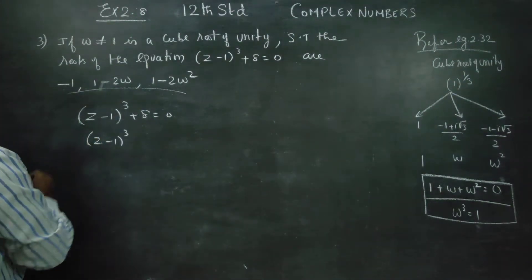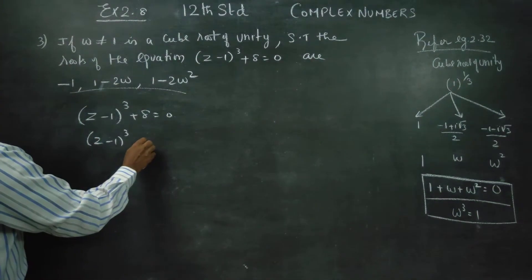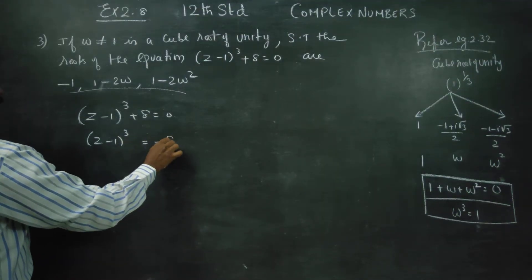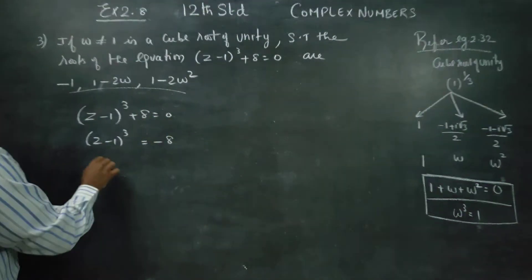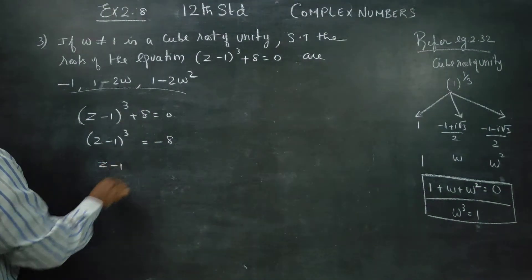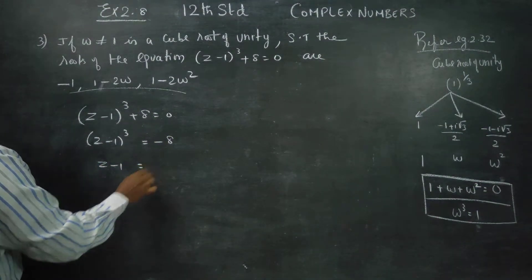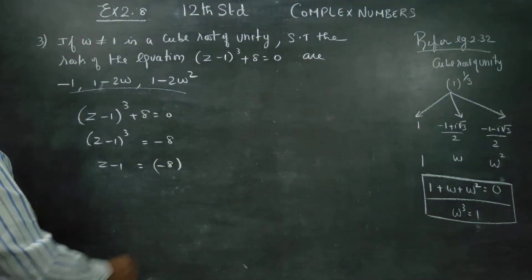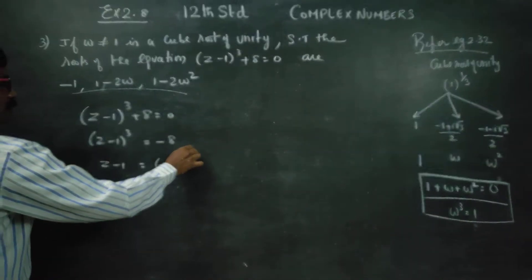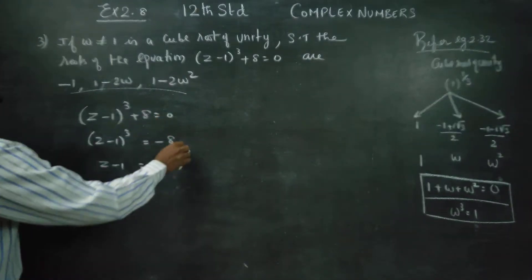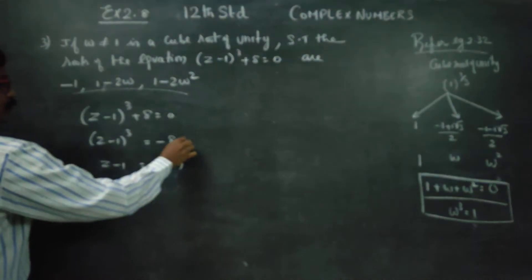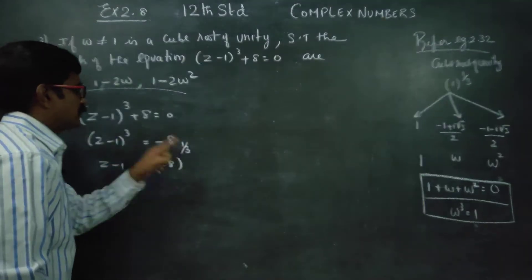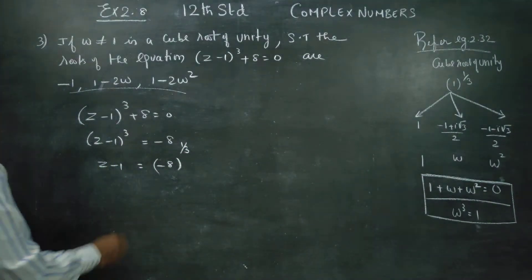Z minus 1 whole cube is equal to minus 8. Z minus 1 is equal to minus 8 whole power 1 by 3. The cube is in the back of the cube root, so we take the whole power 1 by 3.